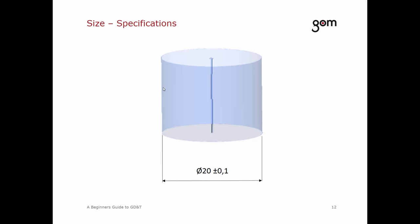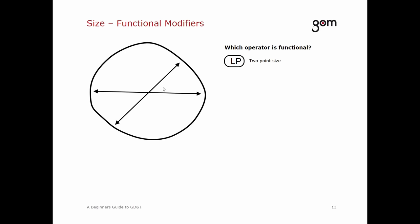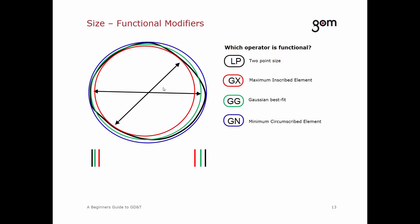This is a specification you've likely seen many times before — but what does it actually mean? Let's assume the measured cylinder looks in a section view like this. It is possible to calculate the minimum and maximum size — this is called a two-point size. You may also calculate the maximum inscribed cylinder, a Gaussian best fit, a minimum circumscribed cylinder, or the envelope requirement. Different modifiers lead to different results, and the modifier should be chosen according to its functional purpose. If there is no modifier on the drawing, LP is used as the default. If any other modifier is explicitly mentioned, it overrules the LP.